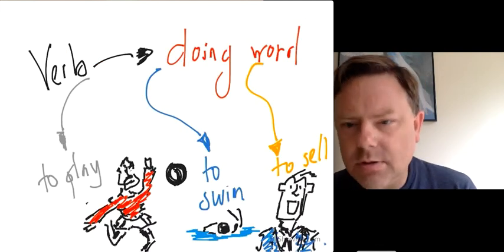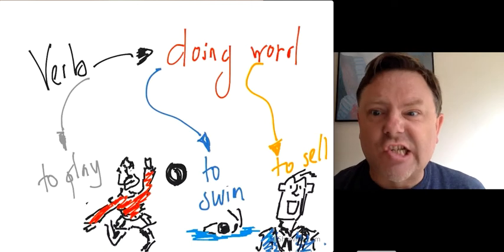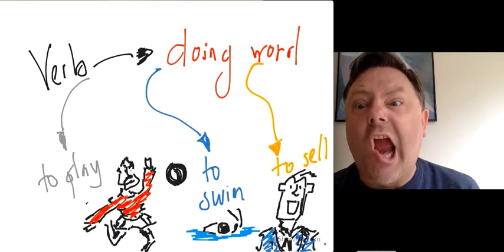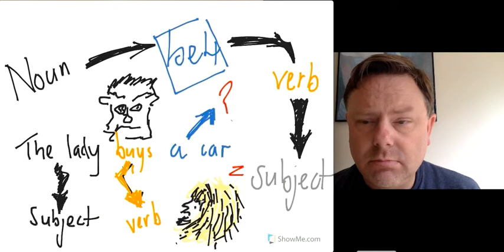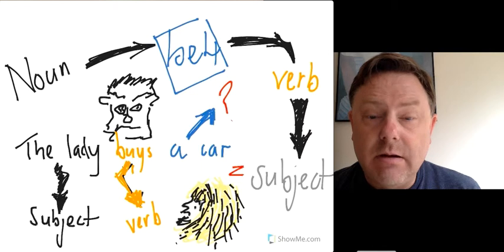But a verb, ladies and gents, is a doing word. To play, to swim, or to sell. Okay, the noun goes before a verb. It's a subject.